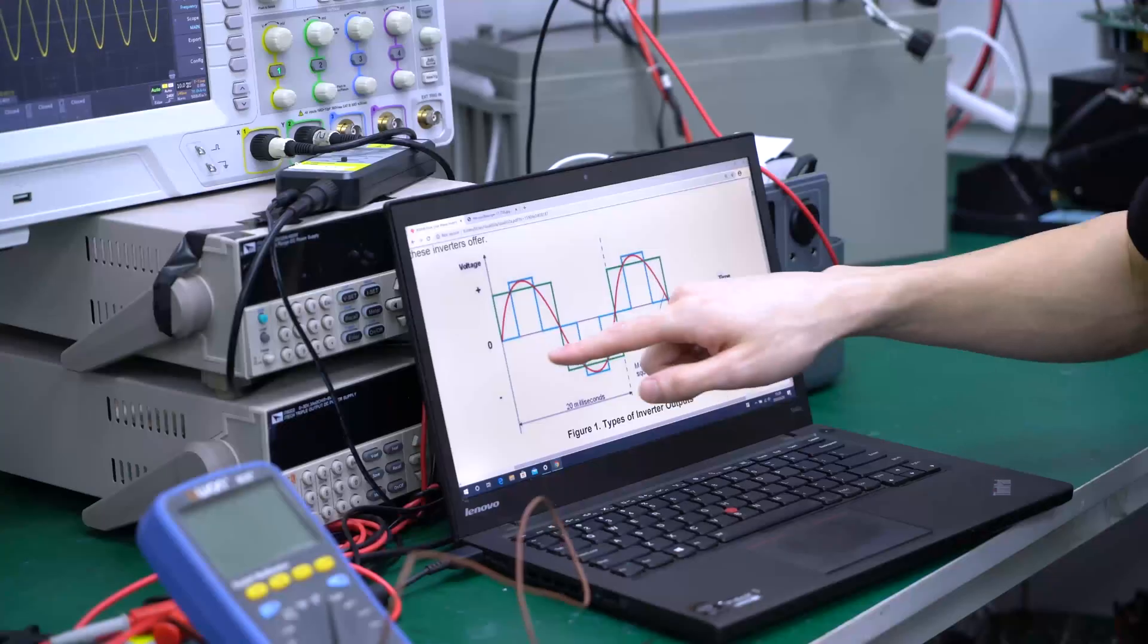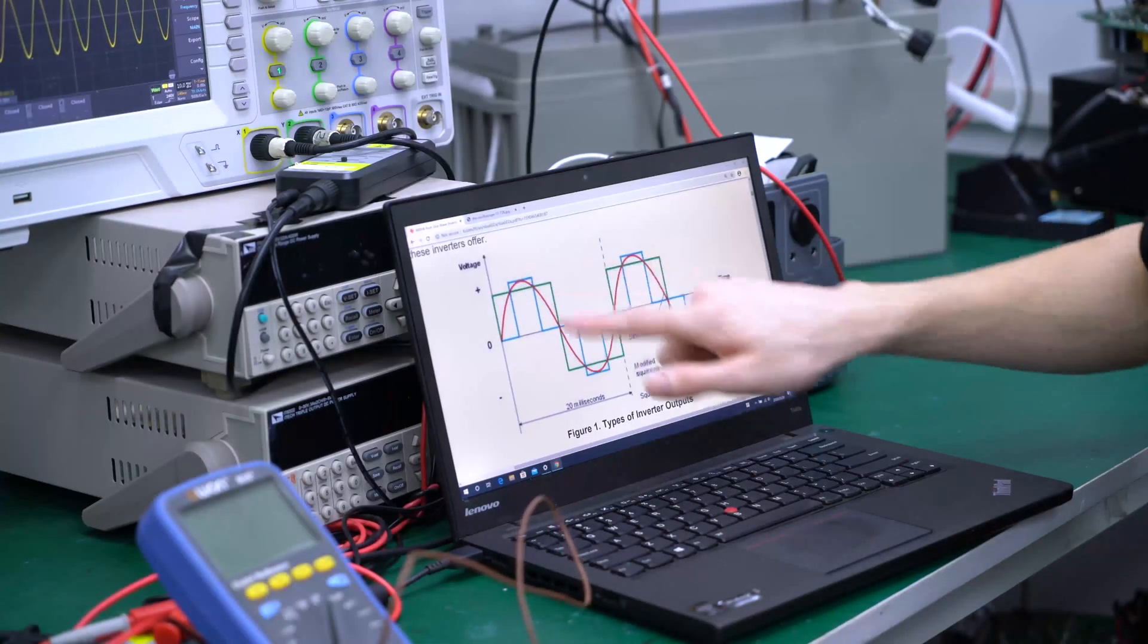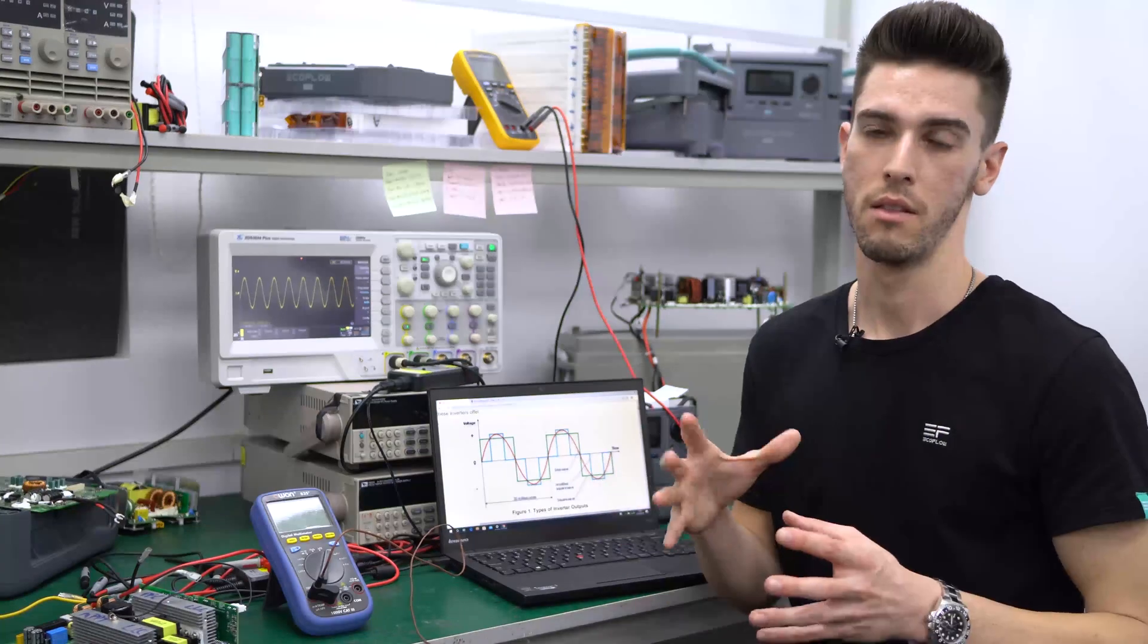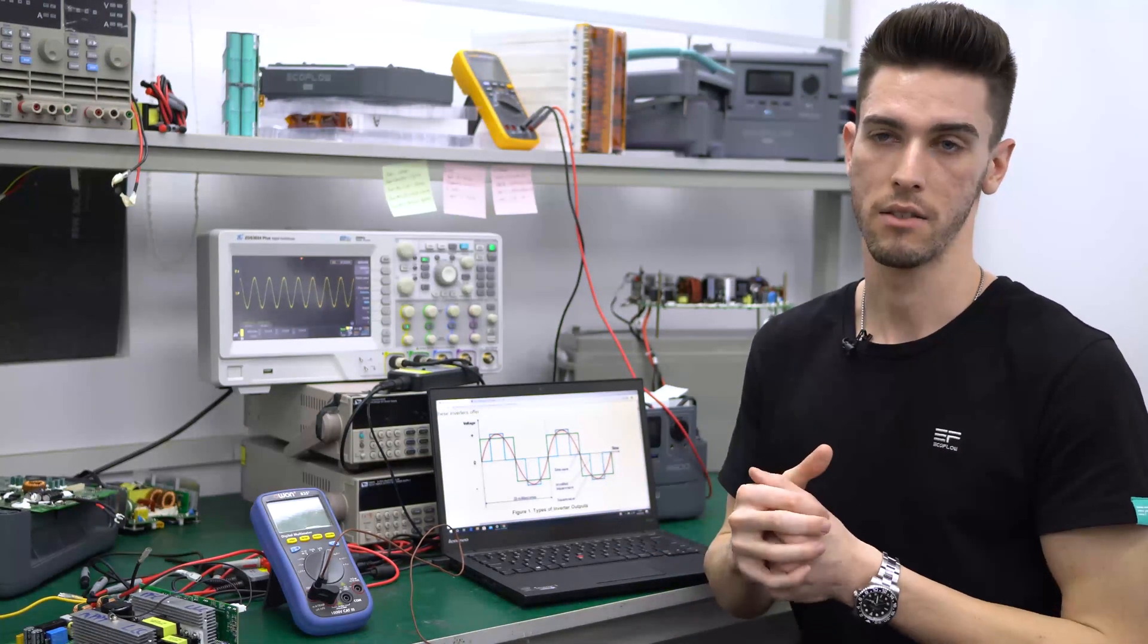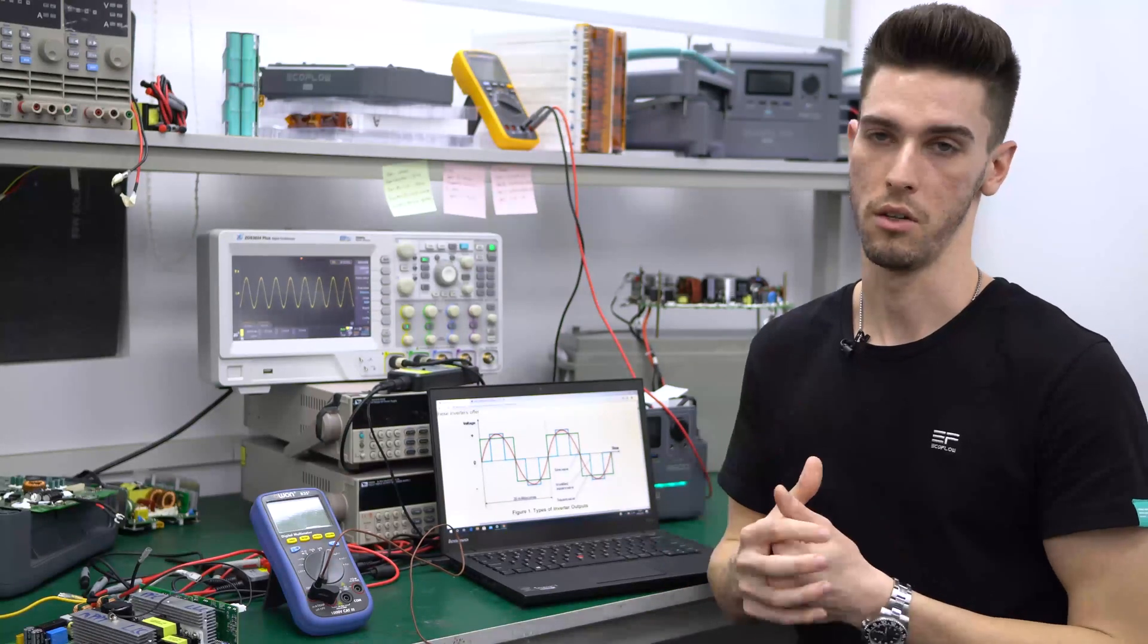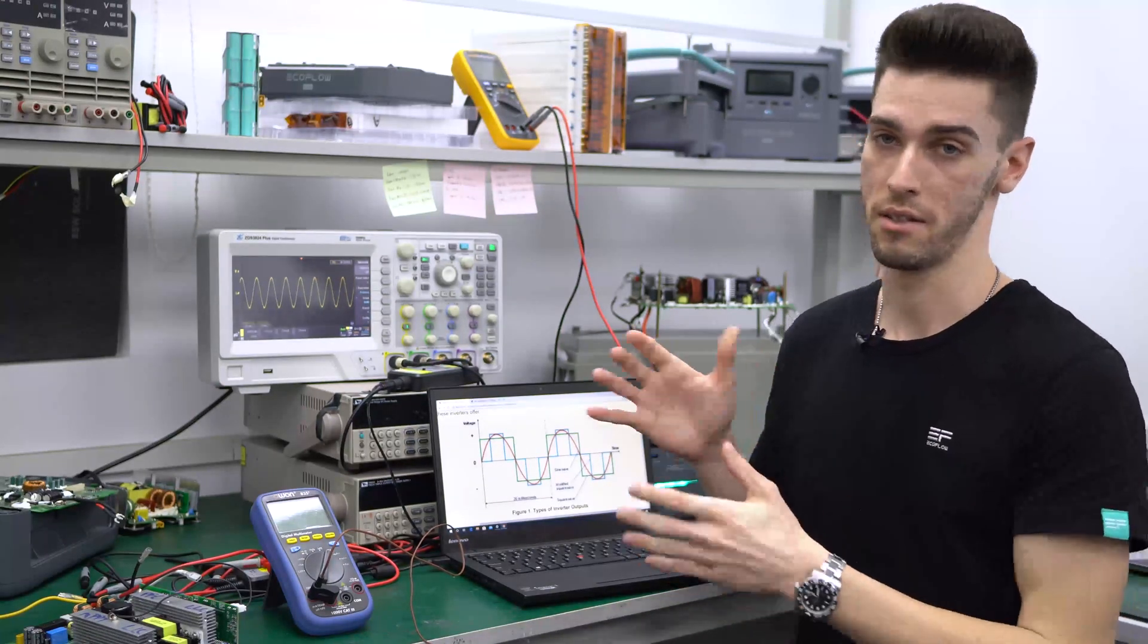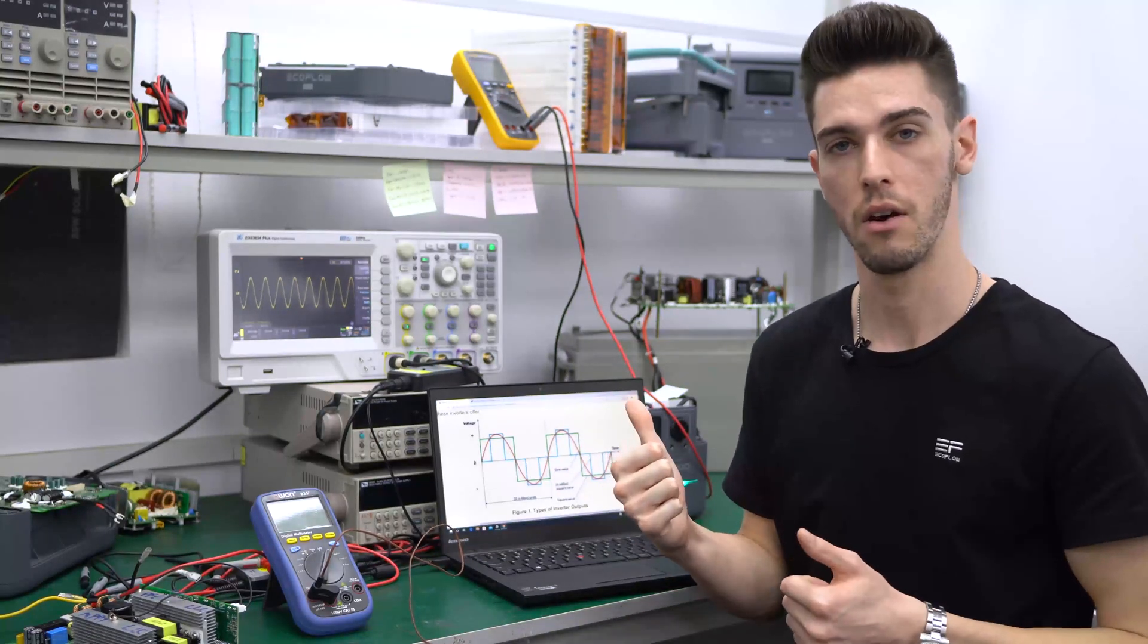What we've done is decided to go with a pure sine wave, which is represented by this red line. And unlike the other two, this poses no risk to damaging electronics. But on the other hand, it's more complex to manufacture, costs a little bit more, but it's worth it because this is the safest option. And this allows us to build a more intelligent inverter. So I'm going to get into that later in the video.